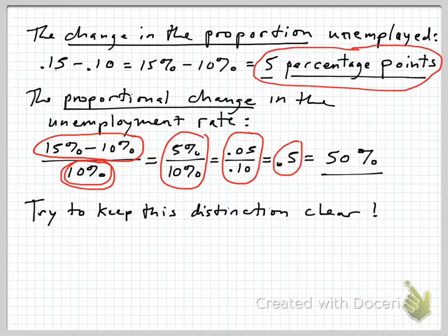So that's going to give us 5% over 10%, or 0.05 over 0.10, which of course comes out to be 0.5, or 50%. So it is true that the unemployment rate has increased by 50%, but of course that was only five percentage points.